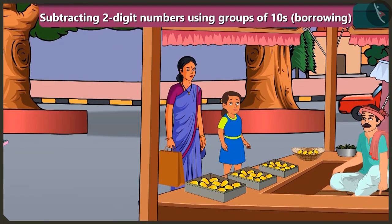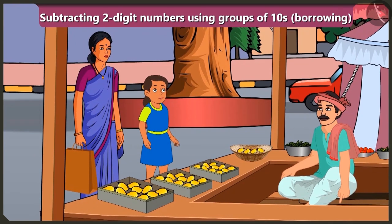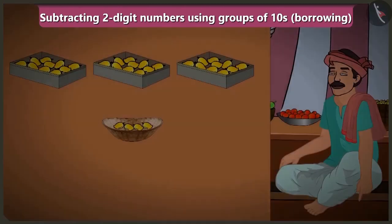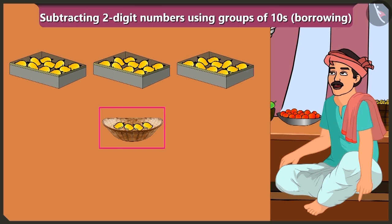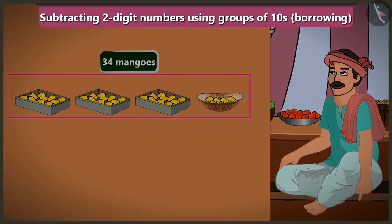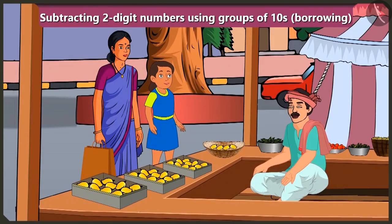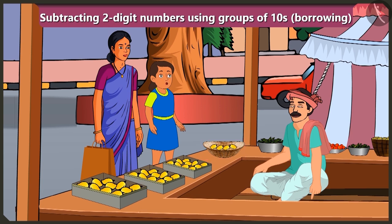We can get mangoes from there. How many mangoes are there in one box? There are ten mangoes in one box. I have three tens and four ones, means thirty-four mangoes. How many mangoes do you want? I want eight mangoes. The mango seller has only four loose mangoes. So how will he give us eight mangoes?